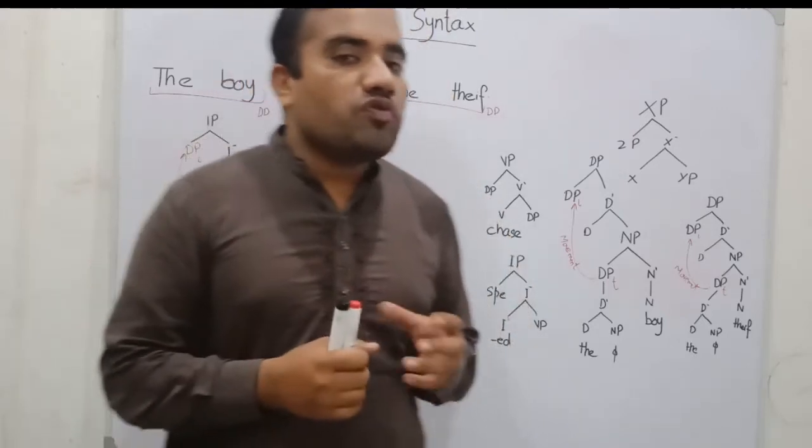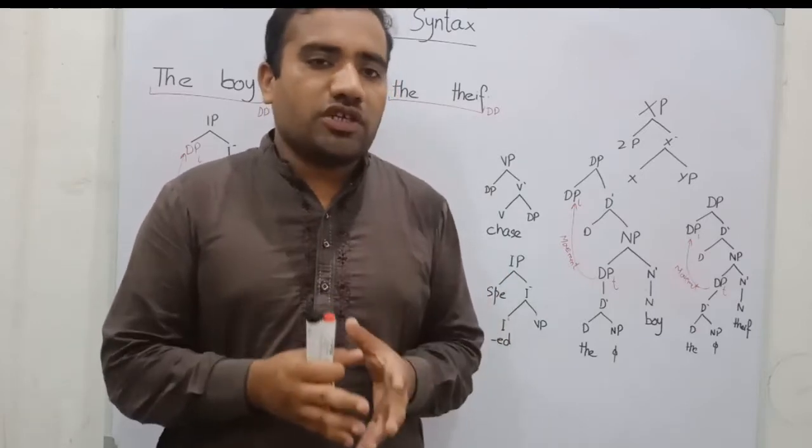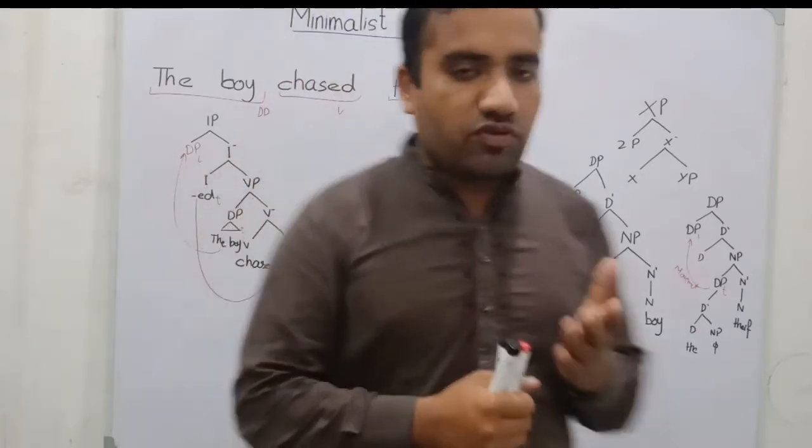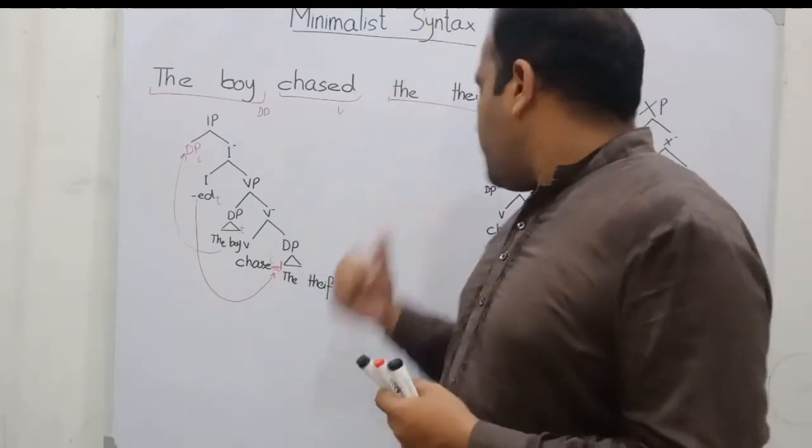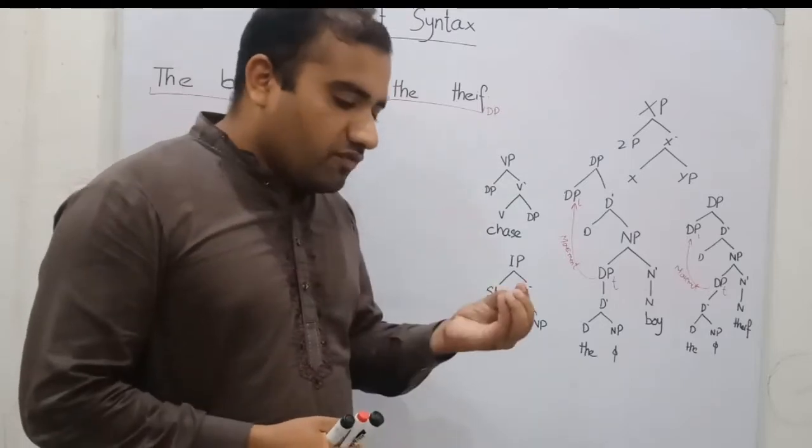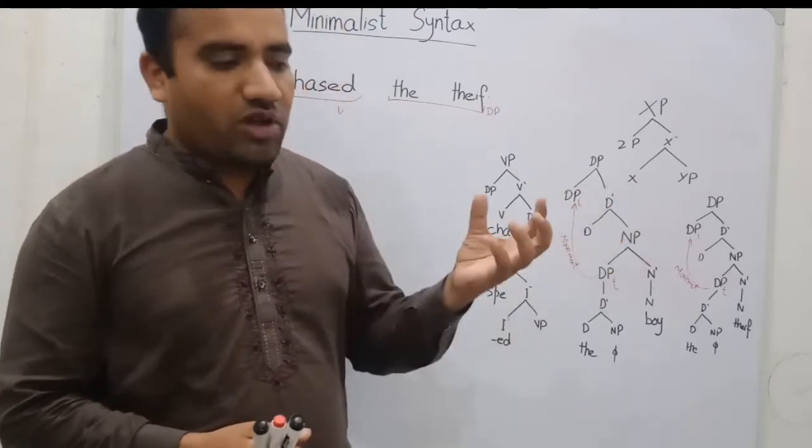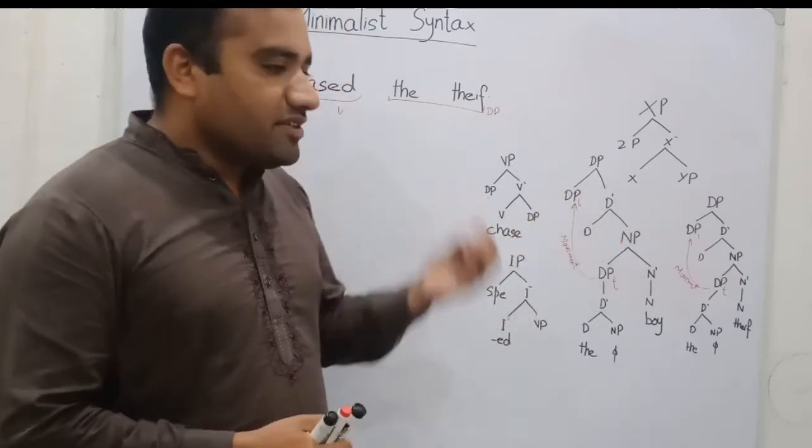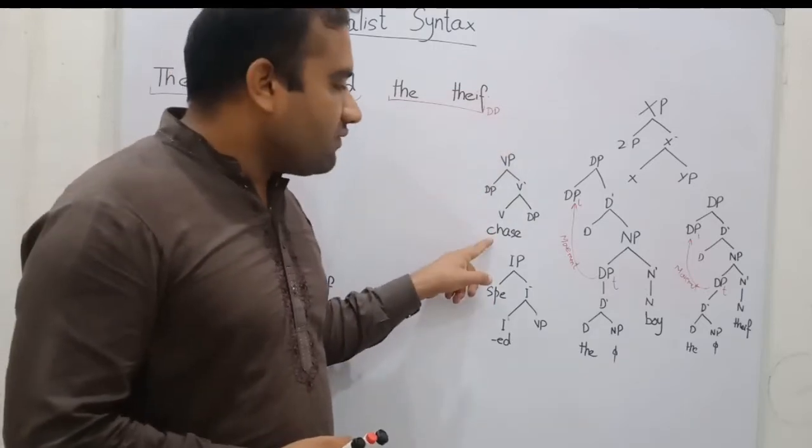Let's move toward the core relation, core structure. The core structure is the VP structure. This is our VP structure. If we think we want to make a sentence, we can say that we drag one word from lexicon, and this word has some projection level. We have the word chase. Chase has some projection level, and chase is the head.